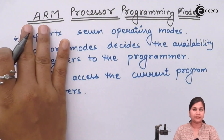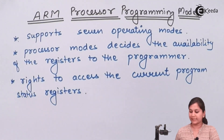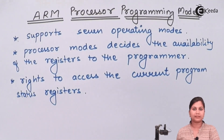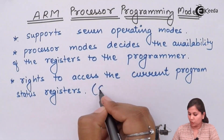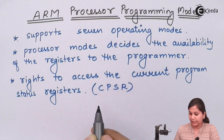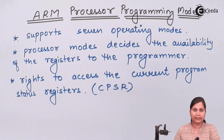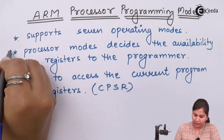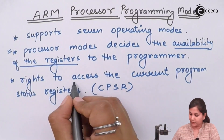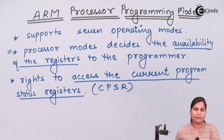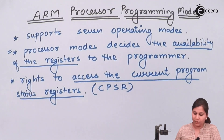The second thing decided by the operating modes is the right to access the current program status register. In the ARM processor there are two program status registers: one is the current program status register (CPSR) and another is the saved program status register (SPSR). Access to the CPSR is also decided by the operating modes.